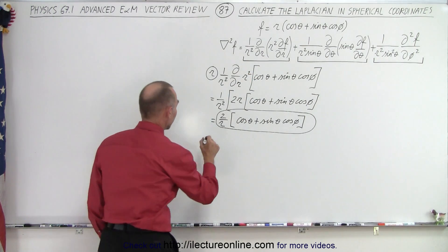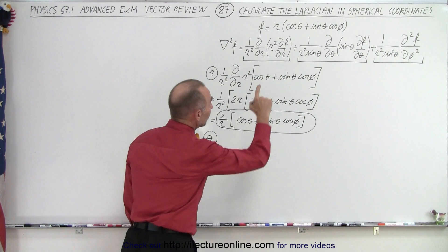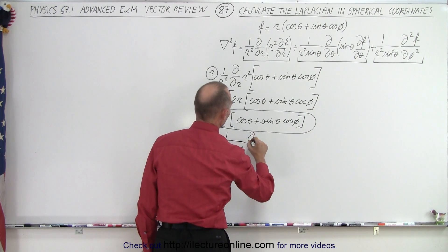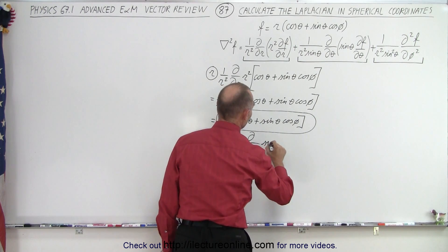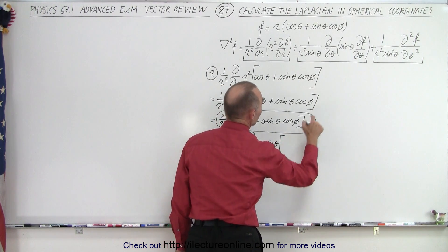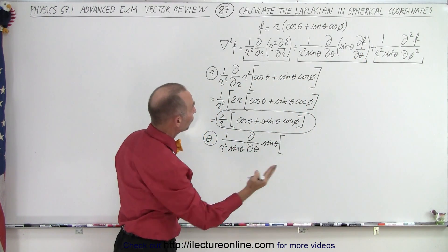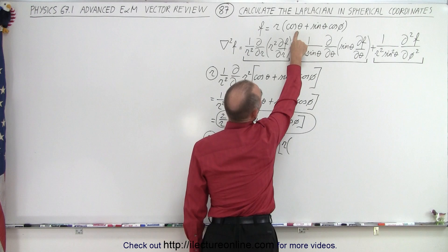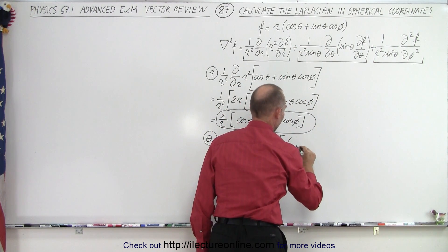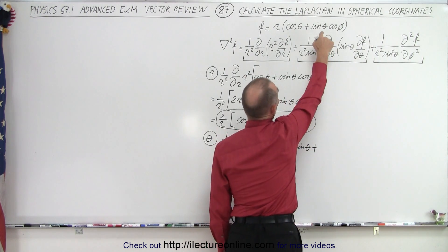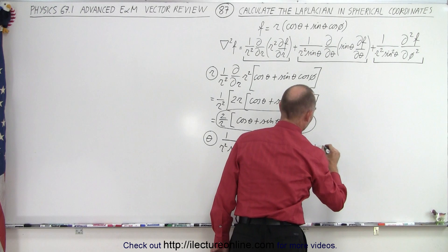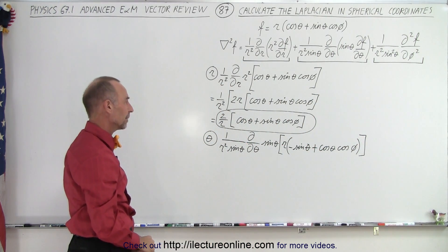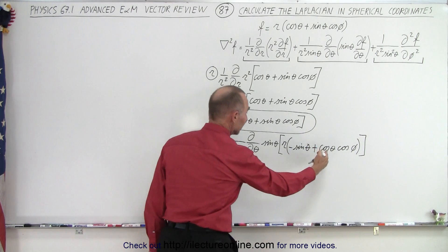Now we're ready to do the second part — the theta part. We have one over r squared times sine of theta times the partial derivative with respect to theta of sine of theta times the partial derivative of the function with respect to theta. Since r is a constant we can take it out. Taking the derivative with respect to theta gives us minus sine of theta plus cosine of theta times cosine of phi. Then we multiply everything times sine of theta.